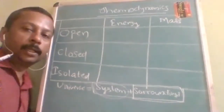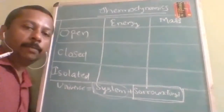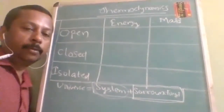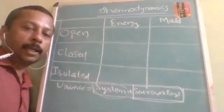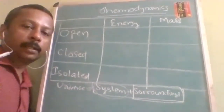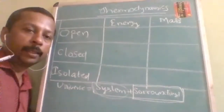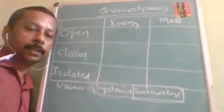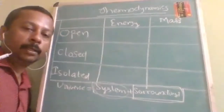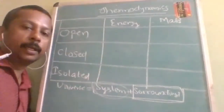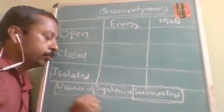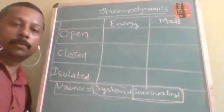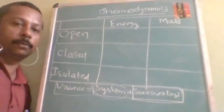At that time, the entire lab becomes the universe. Here, universe does not mean earth and planets. The lab which consists of the test tube as well as the heating system like the Bunsen burner — the test tube is the system, the Bunsen burner is the surrounding, and the entire lab is the universe. That is the meaning of the words used in this chapter.